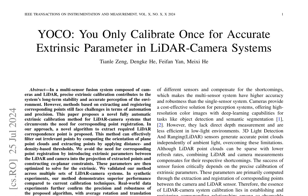A novel, fully automatic extrinsic calibration method for LiDAR camera systems is presented, eliminating the need for corresponding point registration. The proposed algorithm extracts required LiDAR correspondence points by computing the orientation of plane point clouds and applying distance and density-based thresholds to filter out irrelevant points. This approach ensures that only relevant points are used for calibration, increasing the accuracy of the method.